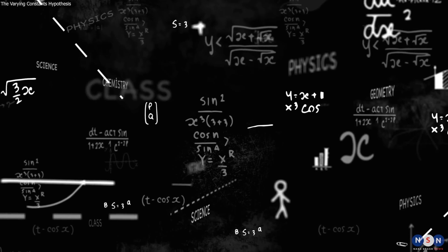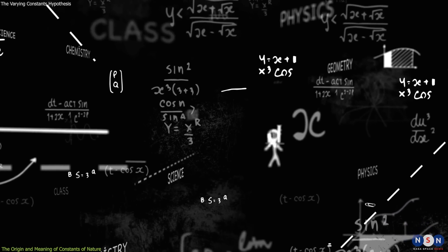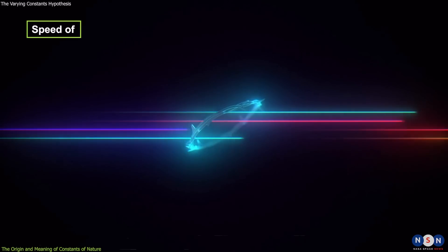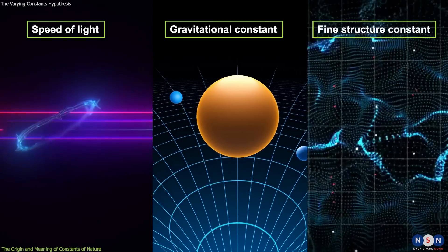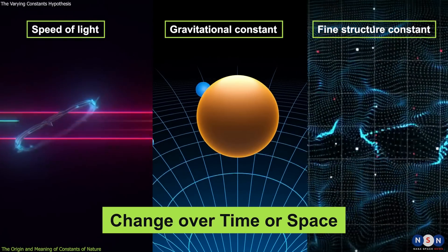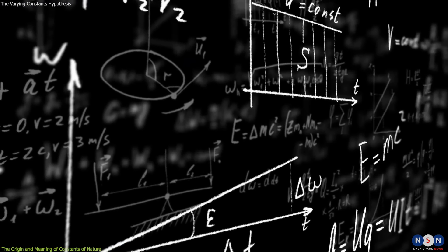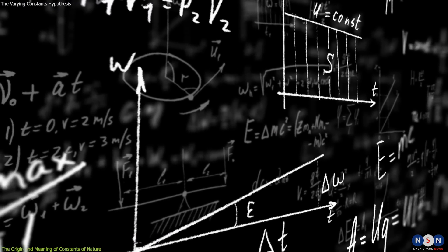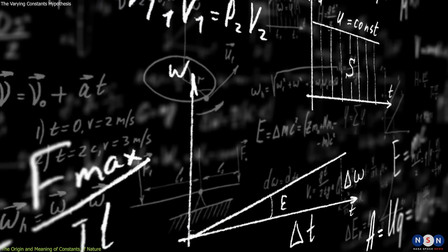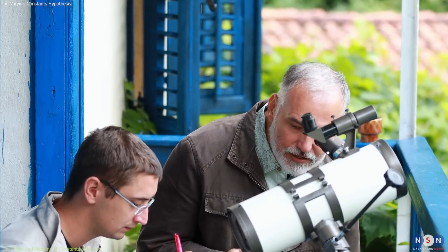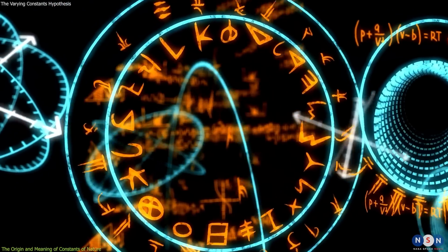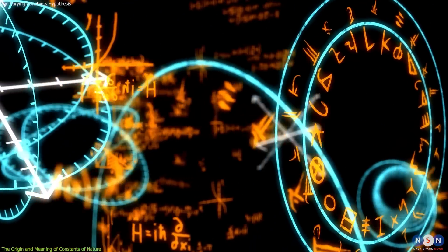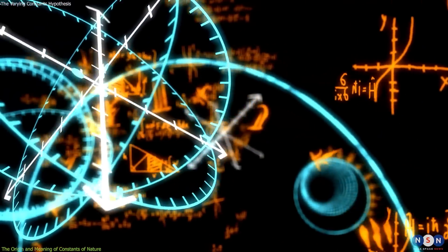The varying constants hypothesis is the idea that some of the fundamental constants of nature, such as the speed of light, the gravitational constant, or the fine structure constant, may change over time or space. Ideas like this challenge the conventional view that our constants are fixed and universal and have implications for cosmology, physics, and astronomy. But where does this idea come from? And what does it mean for our theories and equations that describe nature?